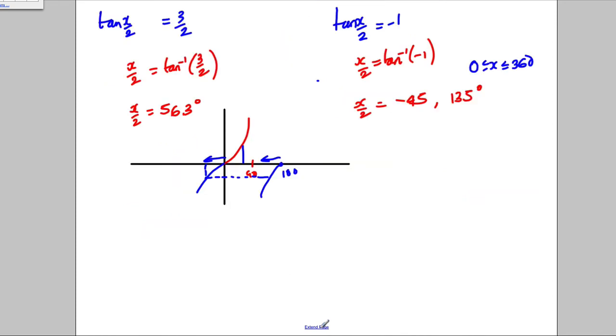Okay. So then what are my X numbers? Well, my X... These are X over 2. So my X must be double that, which would be equal to 112.6 degrees. And my X here would be double that, which would be 270 degrees. And I'm done there.